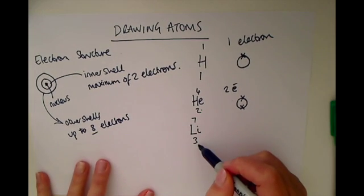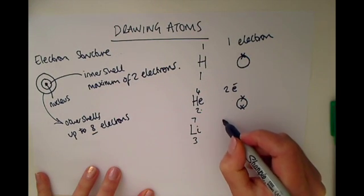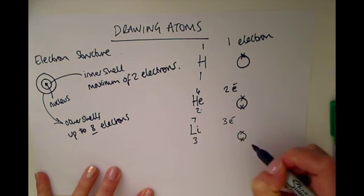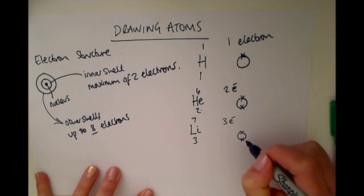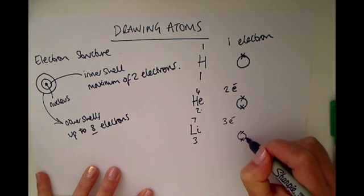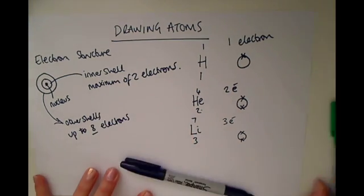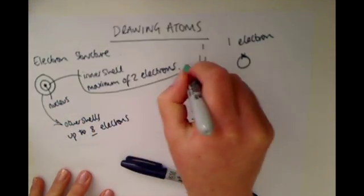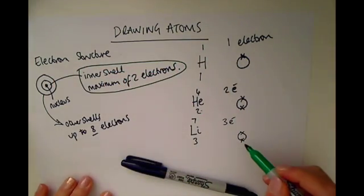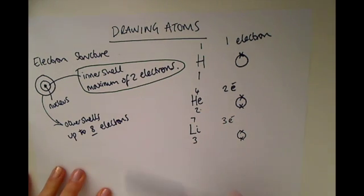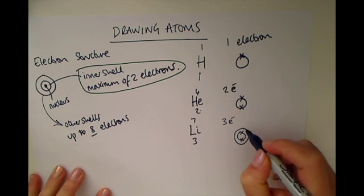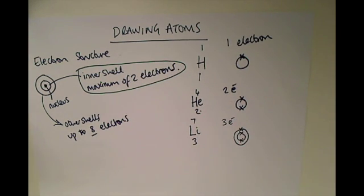To draw lithium, we start off with the inner shell. It's got three electrons, so we fill up the inner shell first with two. Then we've got one more electron to draw. We can't draw it on the inner shell because of the rule — it can only have a maximum of two electrons. So we draw another electron shell around it onto which we place that third electron. So we have one, two, three electrons altogether.